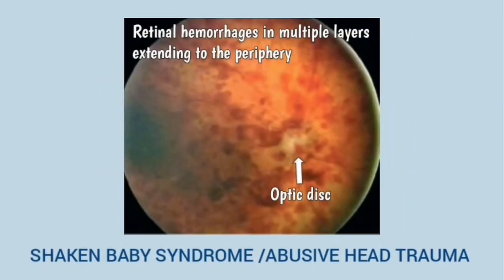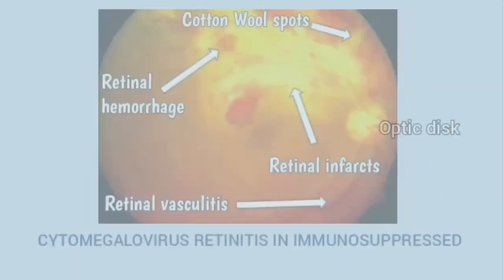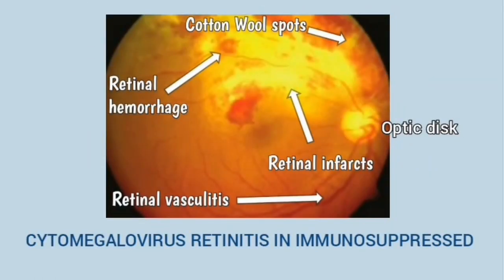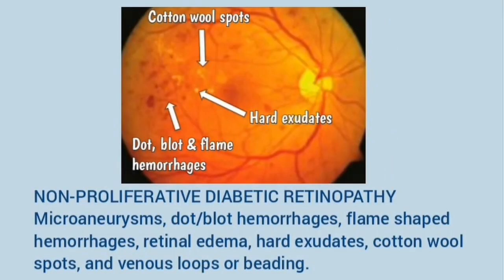This is shaken baby syndrome, or abusive head trauma. There are numerous retinal hemorrhages in multiple layers extending to the periphery. This is cytomegalovirus retinitis in an immunosuppressed patient. There are cotton wool spots (soft exudates), retinal hemorrhages, retinal infarcts, and retinal vasculitis.